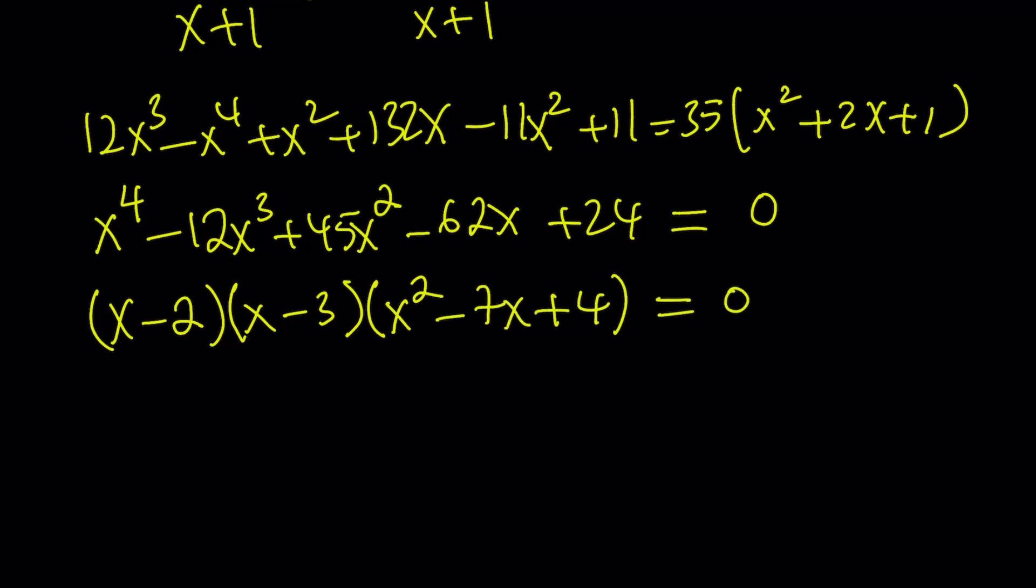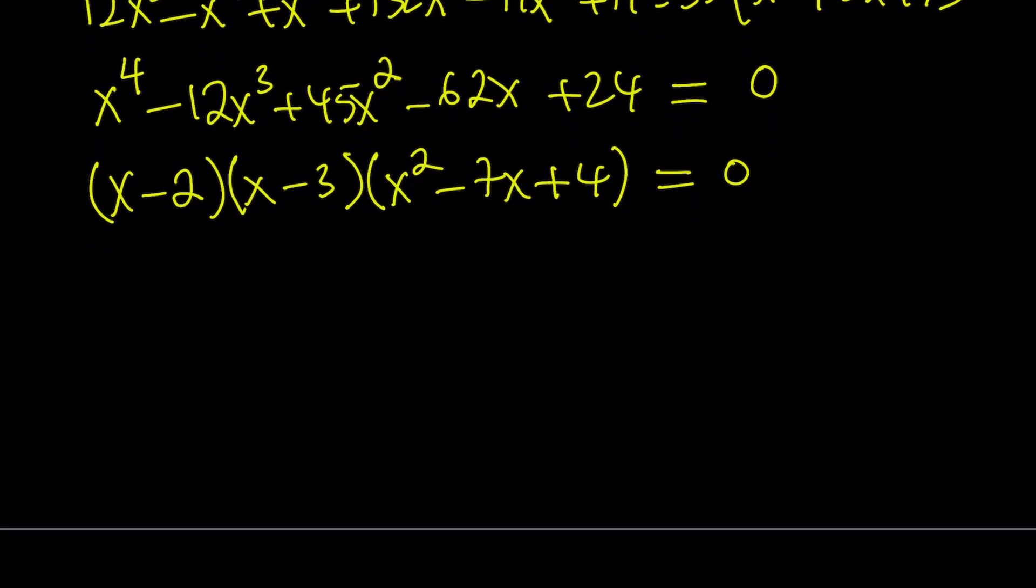And the whole thing is equal to 0. Notice that we weren't able to factor x² - 7x + 4 nicely because it doesn't have rational roots. Therefore, the roots of the quadratic is going to be irrational.